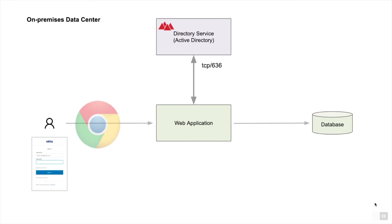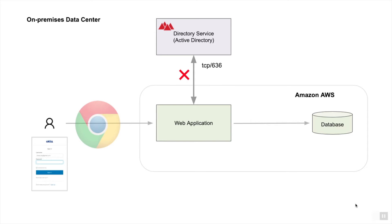The second problem is that the application might not have access to the LDAP server or Active Directory if they are in different security domains. To illustrate this, consider the web application and database deployed in Amazon AWS, while the Active Directory and users are in the enterprise data center. In this case, the web application has no direct path to Active Directory, so this architecture will not work. Active Directory cannot be seen by the web application — they are in two different security domains.